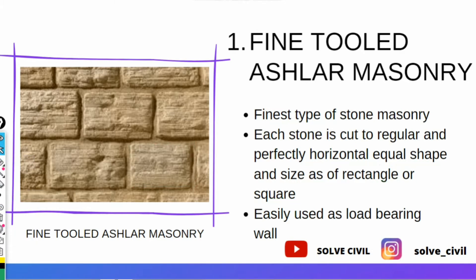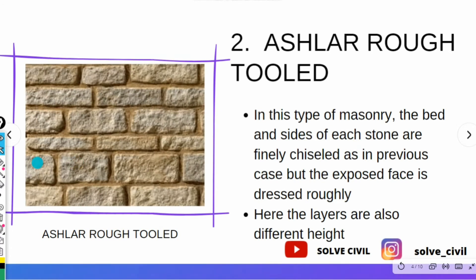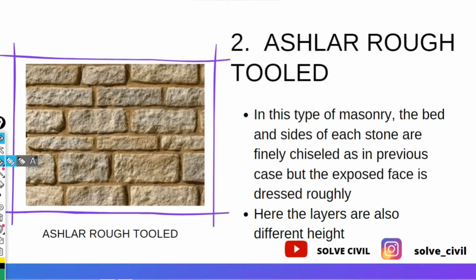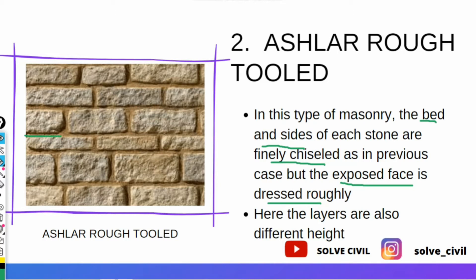The next form of masonry is ashlar rough-tooled. In this type, the bed and sides of each stone are finely chiseled as in the previous case, but the exposed faces are dressed roughly. The layers are also of different heights — if this layer is T1, the thickness of another layer will be T2.